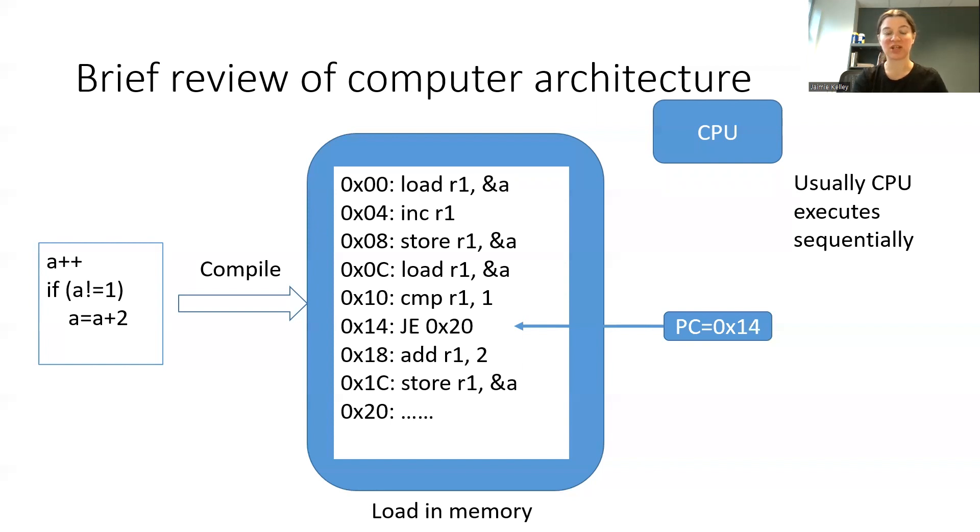In this case, if the condition codes in the CPU state that there is a zero flag raised, or if the previous comparison resulted in equality being accurate, this will result in a jump to the instruction located at 0x20 rather than the instruction located at 0x18.